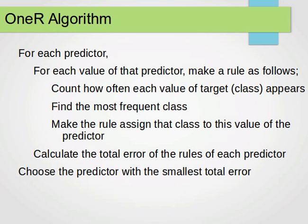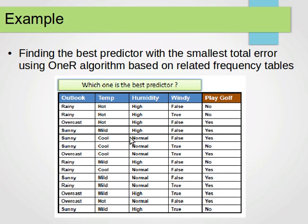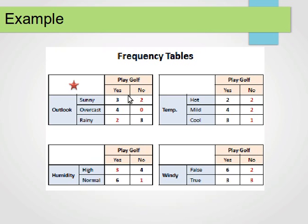To make that concrete, let's look at an example — the weather data, which we've seen before. It has four predictors or attributes and one class, and they're all categorical. From this data, we build frequency tables for each of these columns, for each of these features against the class.